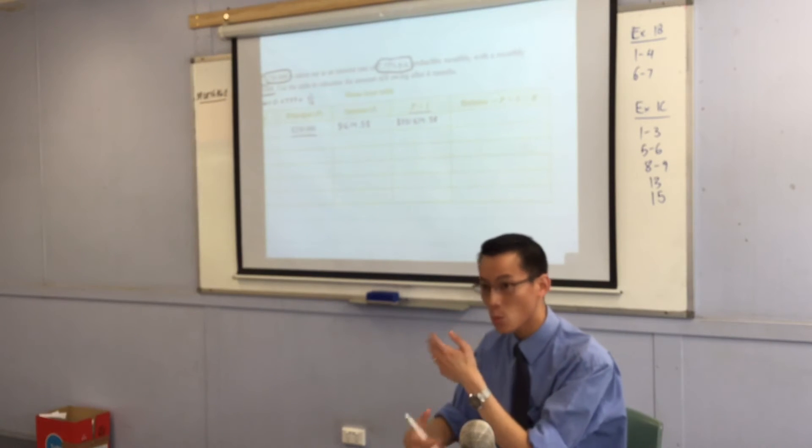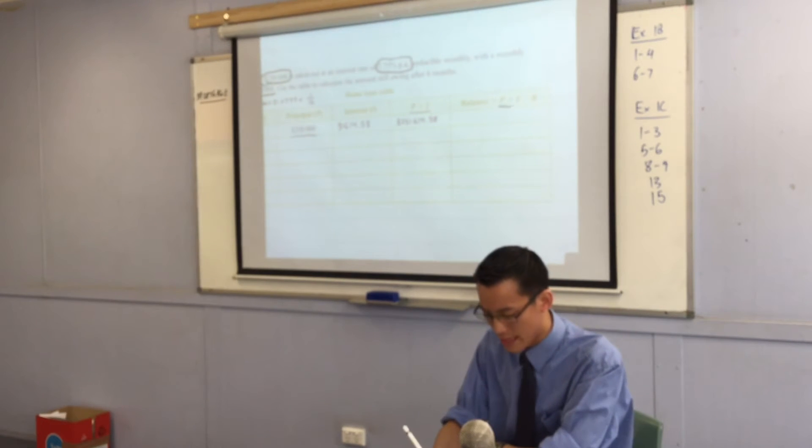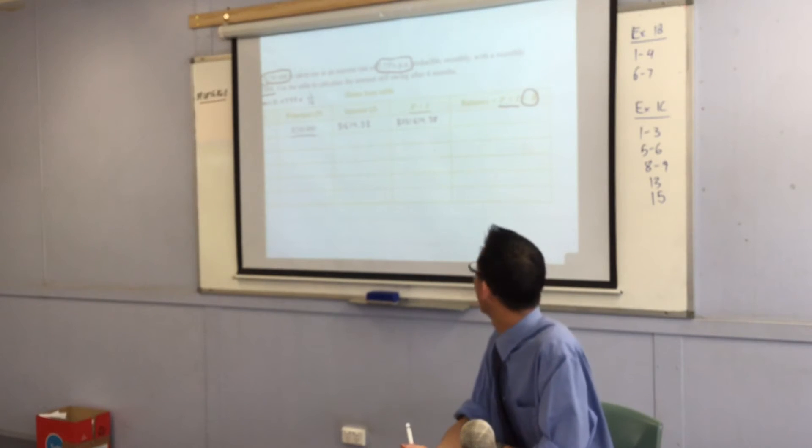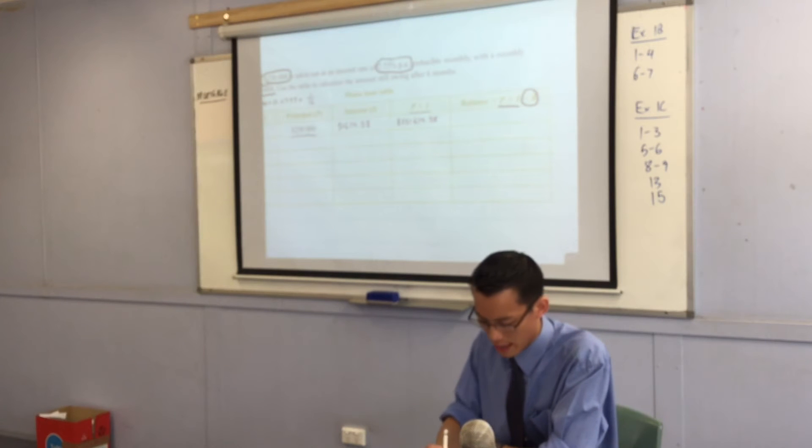So over here, the balance, what I now owe them, is that P plus I. And you're going to take away the repayment you made, the $1,888. So you can go ahead and you can calculate that.